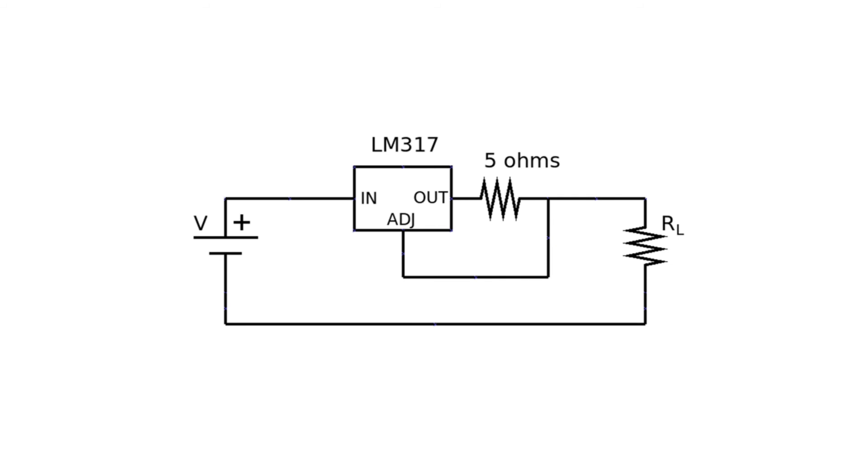Specifically for this IC, according to its datasheet, the output current expressed in amps is equal to the number 1.25 divided by the value of the resistor. For example, for a resistor of 5 ohms, the output current would be 250 mA.